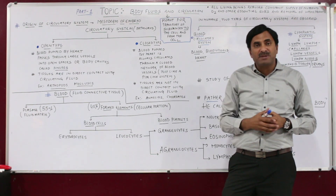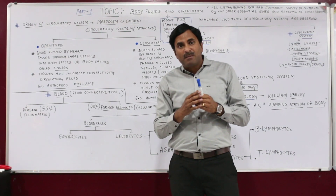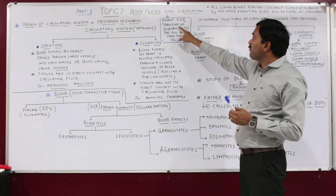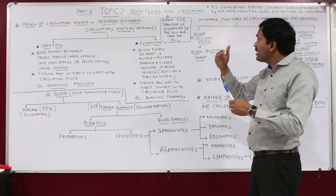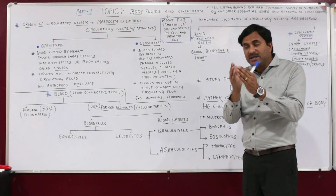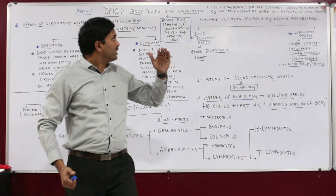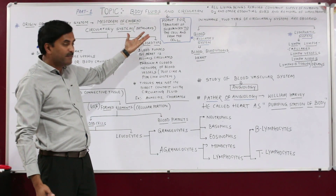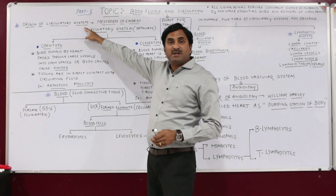If we talk about human beings, the fluid responsible for all these purposes is the blood. Not only blood — lymph is also important — but we will first focus on blood. Blood is meant for the transport of substances to the cell, as well as the removal of substances from the cell. In this topic we will deal with body fluids and how they are circulated.